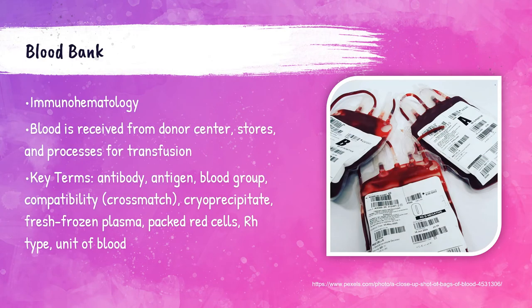The immunohematology or blood banking department is where MLS or MLT professionals help supply the best blood component for patients who need it, and also receive, store, and process donated blood units. Key terms include: antigens — substances that when foreign to the body cause the immune system to activate, and are present on red blood cells; antibodies — produced by the immune system when exposed to a foreign antigen; and compatibility or crossmatch — performed to determine if a donated unit of blood can be safely transfused to a patient.